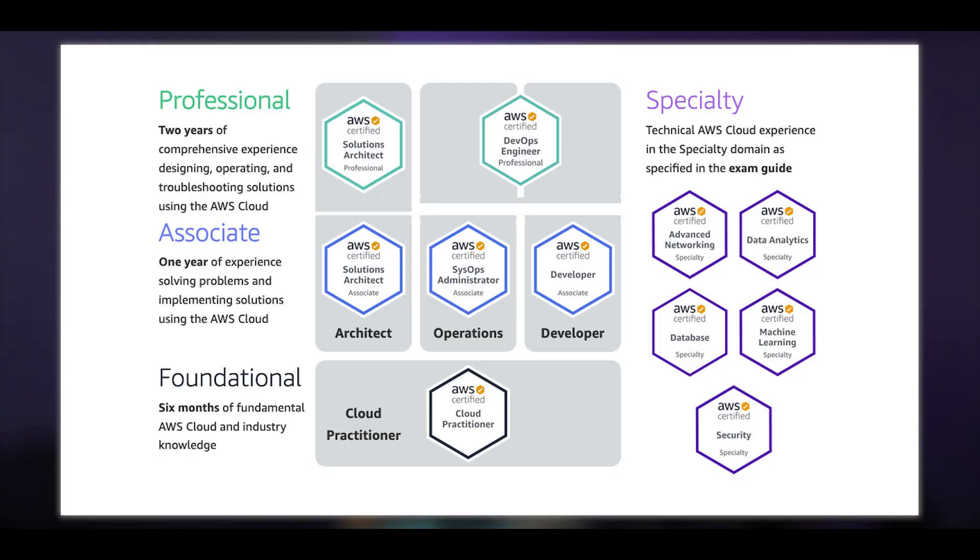We've got four different tiers of certificates at AWS. The first one being Foundational, which is the Cloud Practitioner. Second is Associate, and this is where we have basic hands-on technical certifications like the Solutions Architect, the SysOps Administrator, and the Developer Associate. And right on top we have the Professional tier — the Solutions Architect Professional and the DevOps Engineer Professional. You really need to know what you're doing if you want to pass these exams.